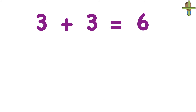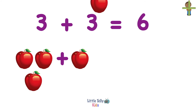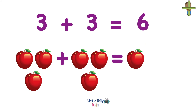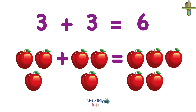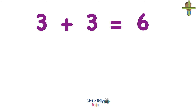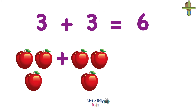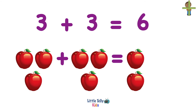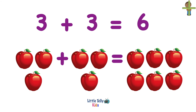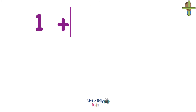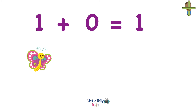Now let's solve another addition problem. 3 plus 3 equals 6. Let's try to understand with the help of an example. So 3 apples plus 3 apples equals 1, 2, 3, 4, 5, 6. 6 apples. Let's look at it once again. There are 3 apples, plus now 3 more apples come in. 3 and 3 equals 6 apples.